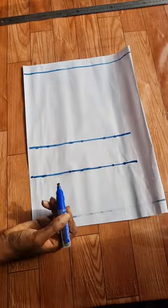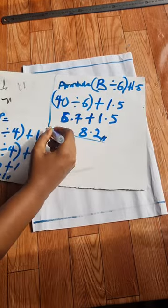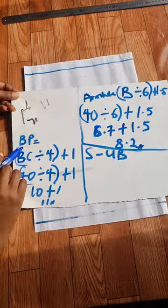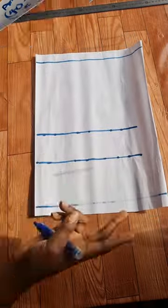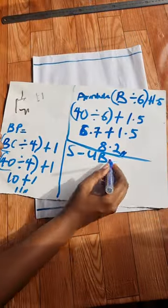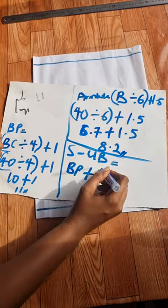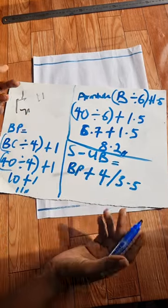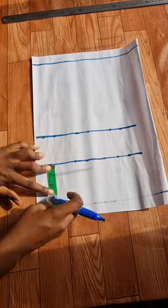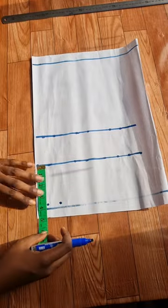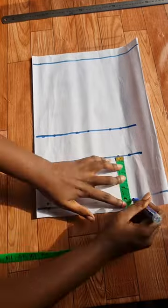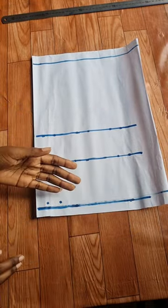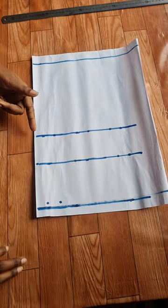Now we'll move on to the underbust point. Usually the underbust is the bust point plus 3.5 inches or bust point plus four inches, depending on how big the person is. If your bust is about 36, you can use 3.5; if it's over that, you can use four inches to get your underbust point. This is me connecting the lines. We have our armhole, bust point, and underbust.